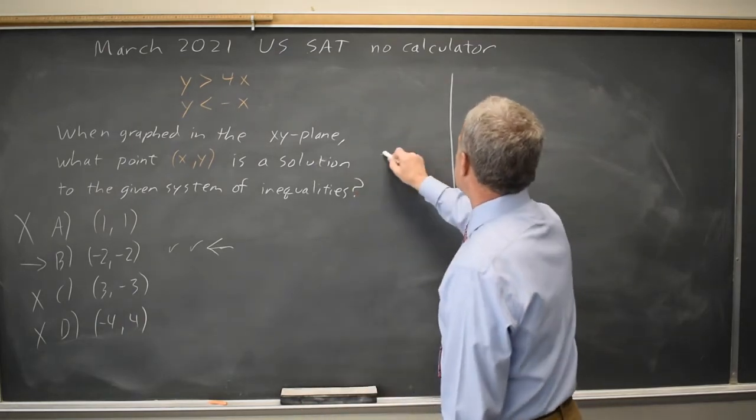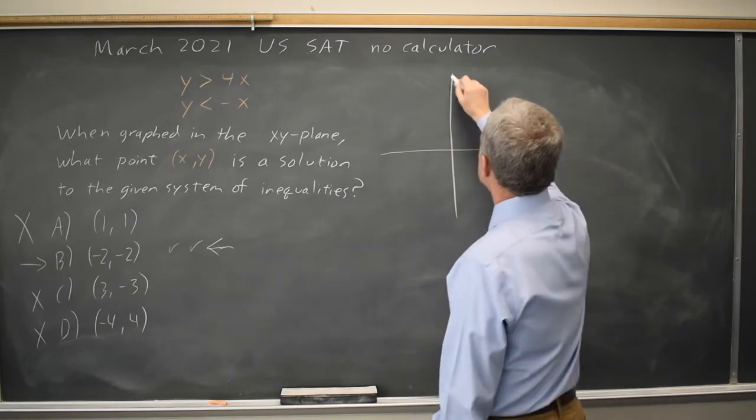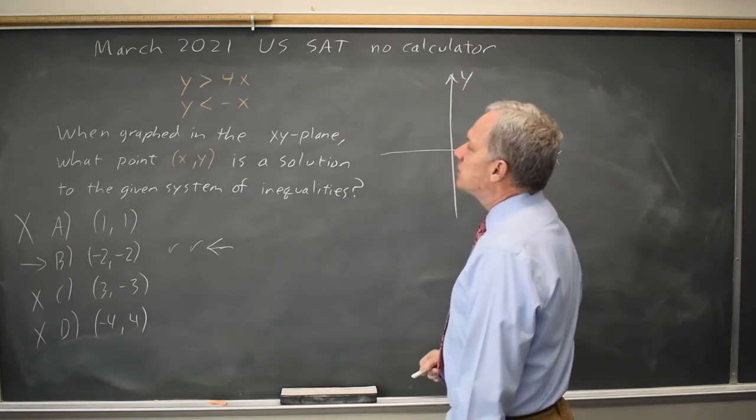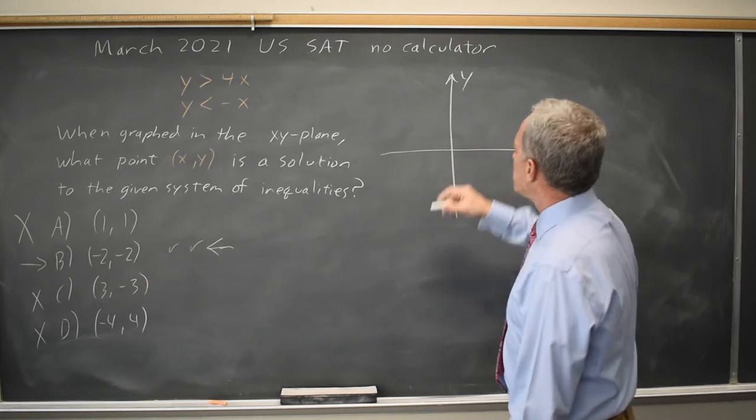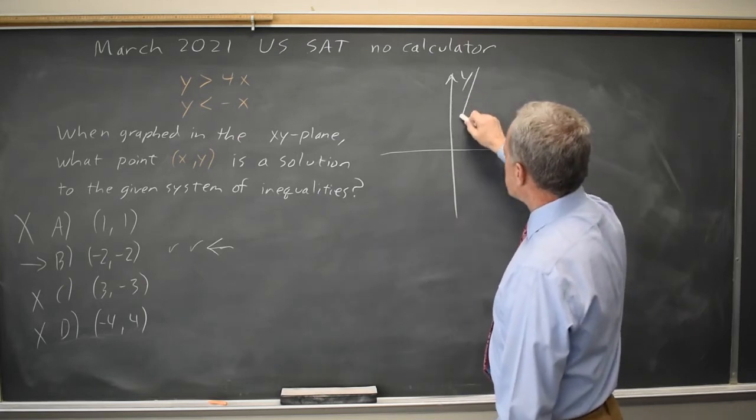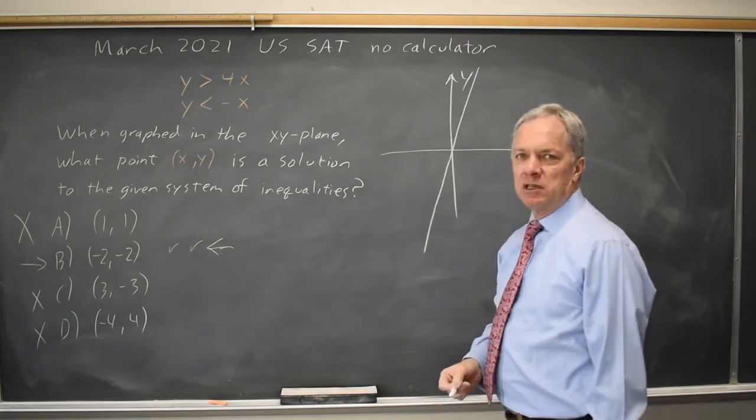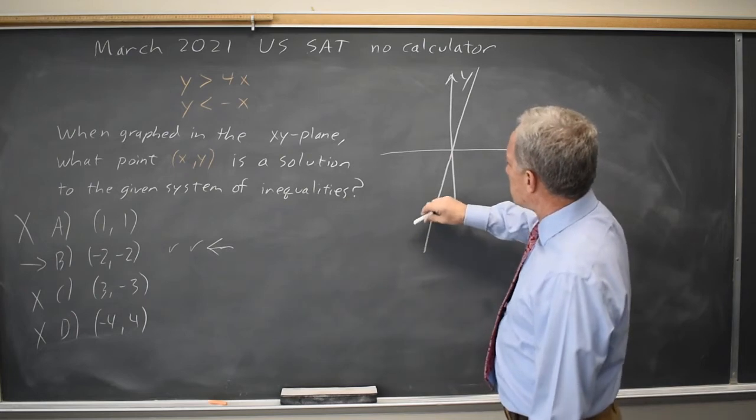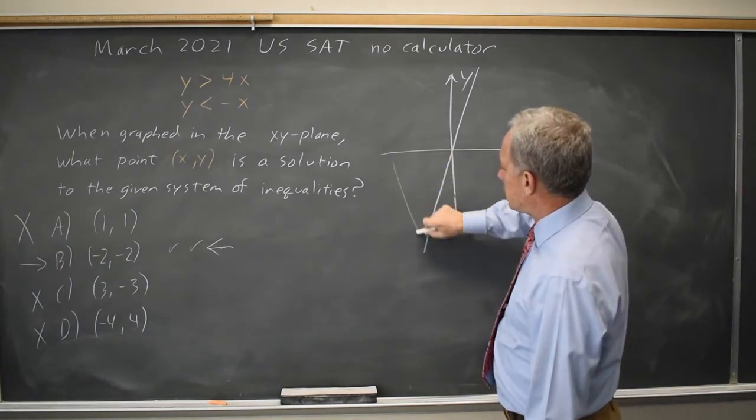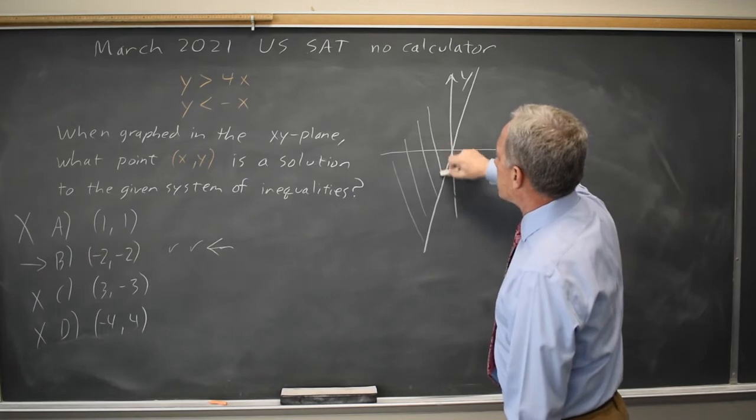Alternatively, I can graph this. Sketching the graph, Y greater than 4X. Y equals 4X is a line through the origin with a steep positive 4 slope. And Y greater than is everything above that.